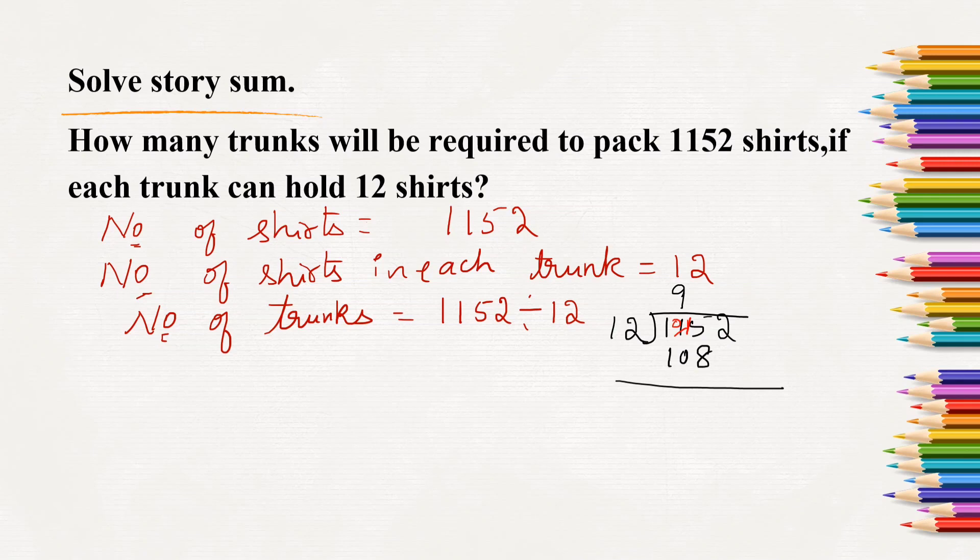0 minus 0, 0. 1 minus 1, 0. Bring down 2. Now, we have 72. Well, 6 times is 72.